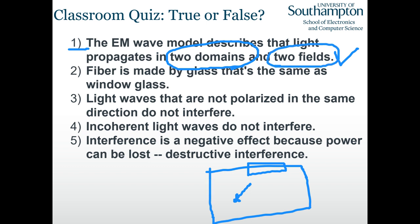Question two: fiber is made of glass, the same as window glass. This is actually false. When we manufacture a fiber, we melt it to a high temperature — it becomes liquid. When the temperature drops down, there's no clear transition from liquid to solid. So fiber is very different from window glass; it can bend, whereas window glass is very hard and cannot be bent.